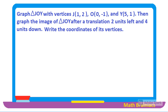Graph triangle JOY with vertices: J at the ordered pair (1, 2), vertex O at the ordered pair (0, −1), and vertex Y at the ordered pair (5, 1). Then graph the image of triangle JOY after a translation 2 units left and 4 units down, and write the coordinates of its vertices.